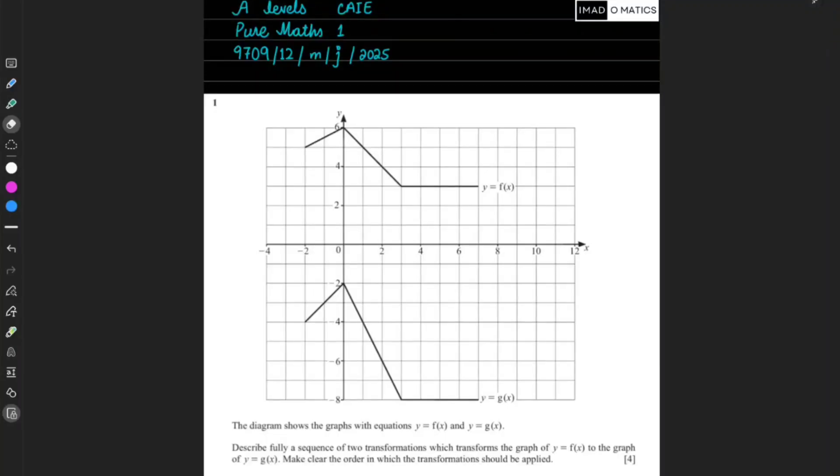Assalamu alaikum and welcome back to mathematics. Today the paper I'm going to do is A-level CIE's Pure Maths 1, paper code 9709 variant 12 for May/June 2025. This is question number one of our paper.